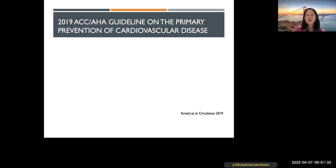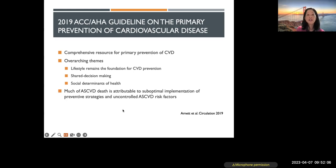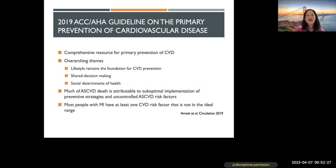In terms of guidelines for prevention, we go through risk assessment, lifestyle interventions, and pharmaceuticals, because all of these play a role. The 2018–2019 guidelines are a comprehensive resource for primary prevention of cardiovascular disease. Overarching themes: lifestyle remains foundational, shared decision-making between provider and patient is very important, and social determinants of health matter. Much of ASCVD death is attributable to suboptimal implementation of preventive strategies and uncontrolled risk factors — either we're not giving people the preventive strategies they need, or their risk factors are not well controlled.